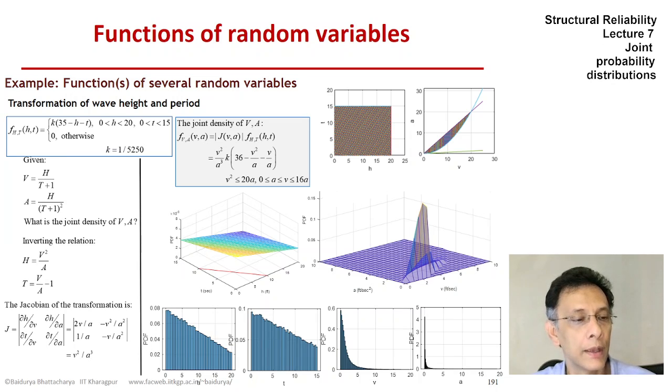So h and t, those linear densities, transform to something which look very different for v and a.